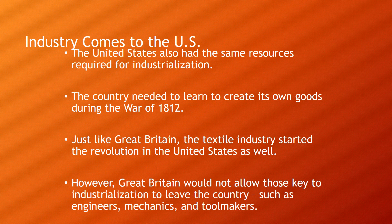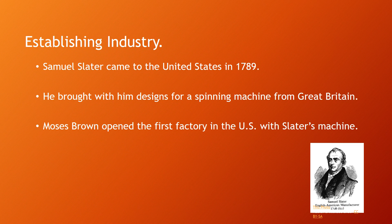Just like Great Britain, the textile industry started the revolution in the United States as well. This was because Great Britain would not allow key people important to industrialization — such as engineers, mechanics, and tool makers who had made machines and new inventions — to leave the country. Samuel Slater came to the United States in 1789 and brought with him designs for a spinning mill from Great Britain. Moses Brown then opened the first factory in the U.S. with Slater's machine.